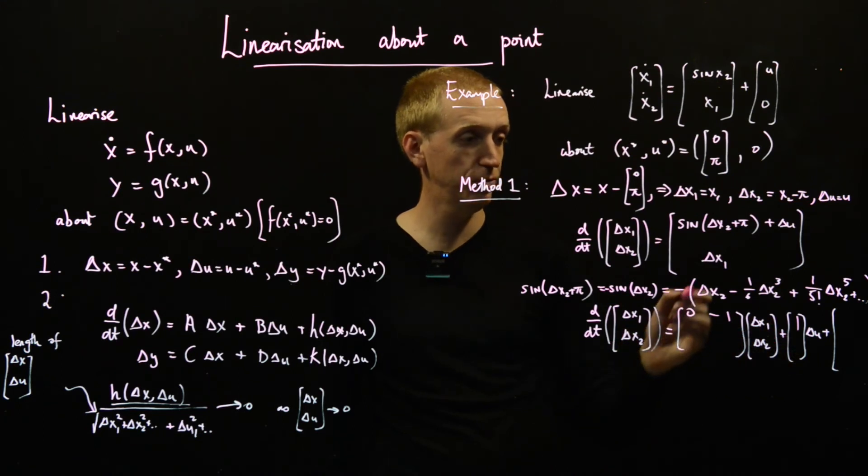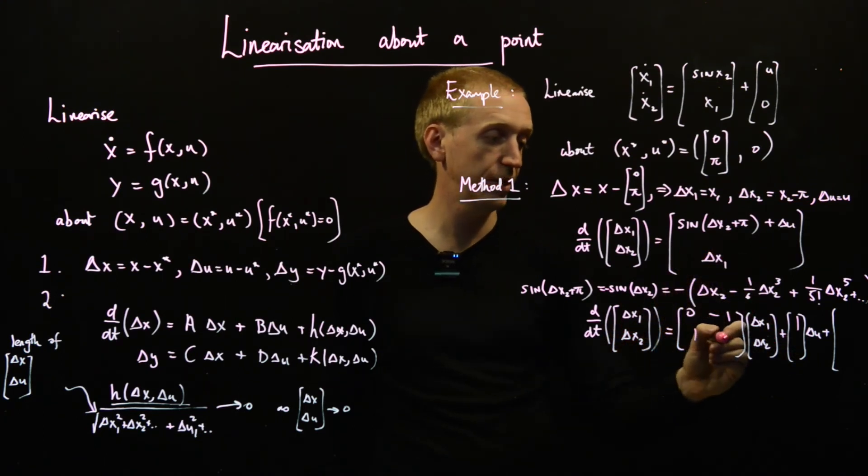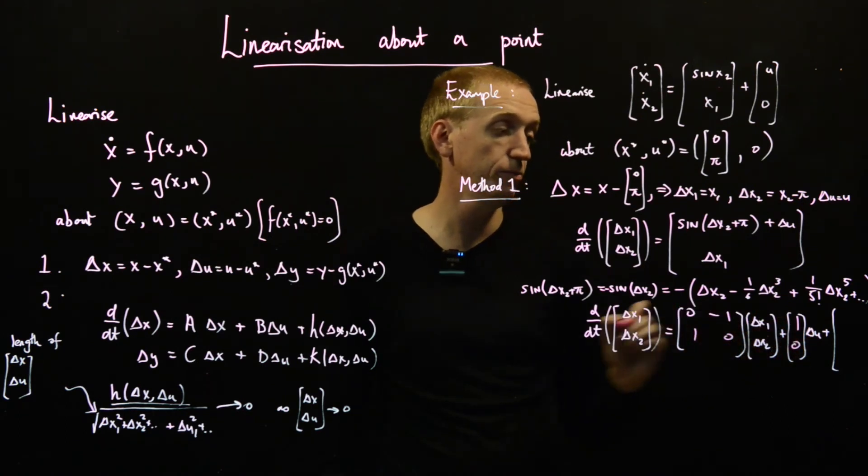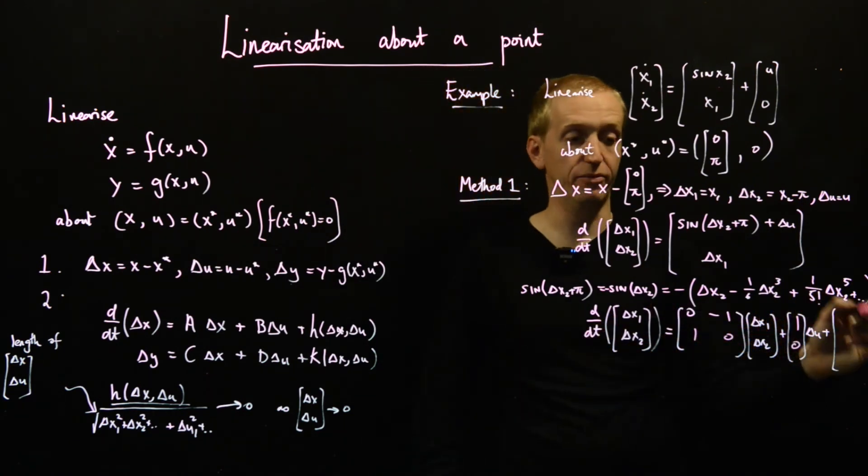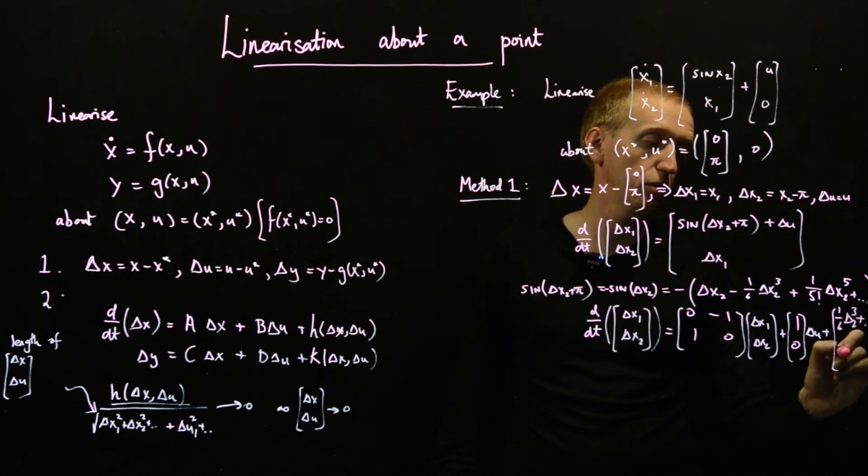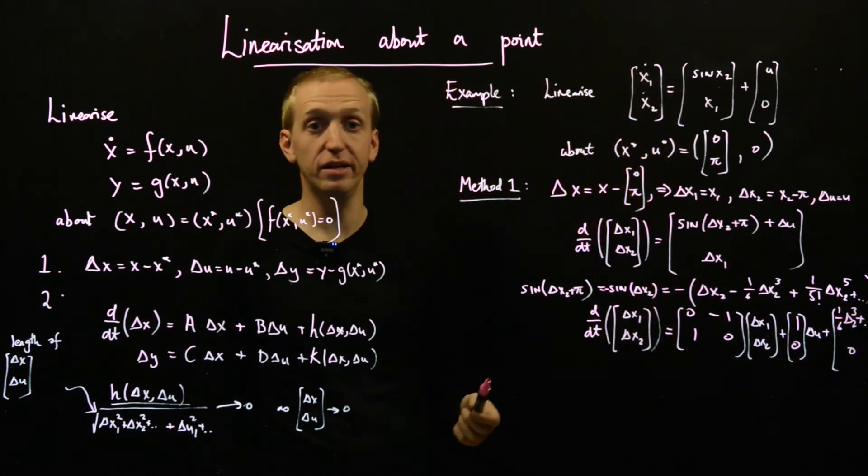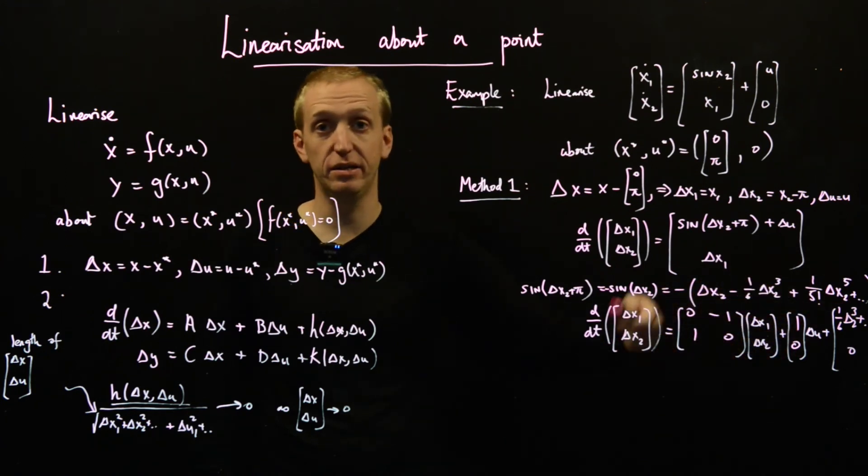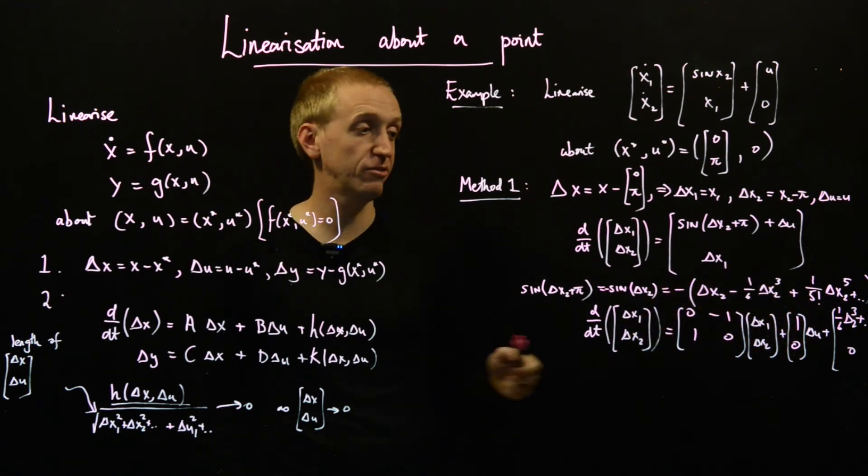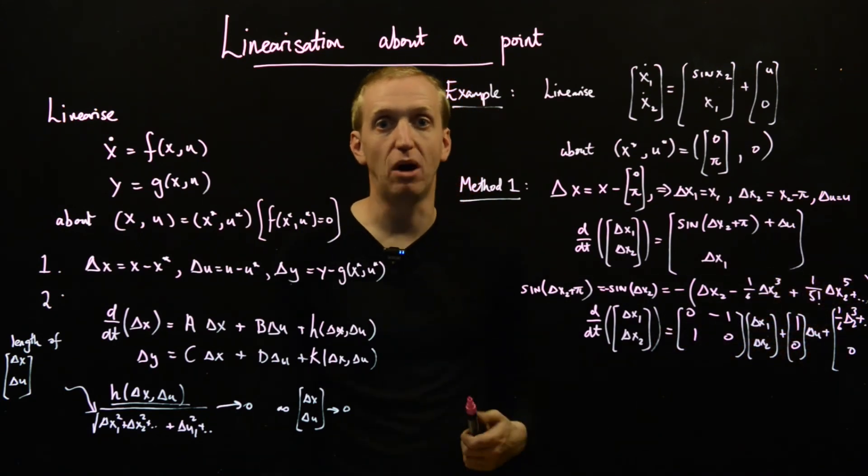Now let's deal with the second equation. Well, delta x2 dot is just equal to delta x1. So we've got a 1 and a 0, and nothing depends on u. And now we just have all of the junk. So we've got the one sixth delta x2 cubed, and so on. So just by substituting in and messing around, we've been able to put it into our linearized form with our linearized bit and a whole load of higher order terms. So that's fine.